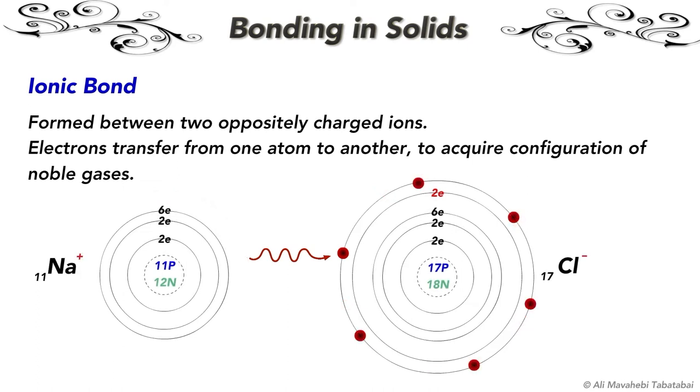The electrostatic force of attraction between the oppositely charged ions forms an ionic bond. So in ionic bonds, electrons transfer from one atom to another to acquire the configuration of stable atoms. Ionic bonding occurs in some of the insulating materials.